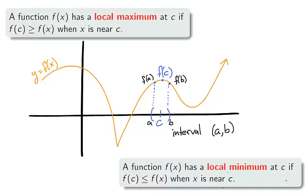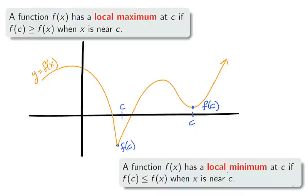We mean that for some open interval around c, no matter how close the endpoints, the values f of x on that interval are lower than f of c. In a similar way, f has a local minimum at c if f of c is smaller than f of x when x is near c.